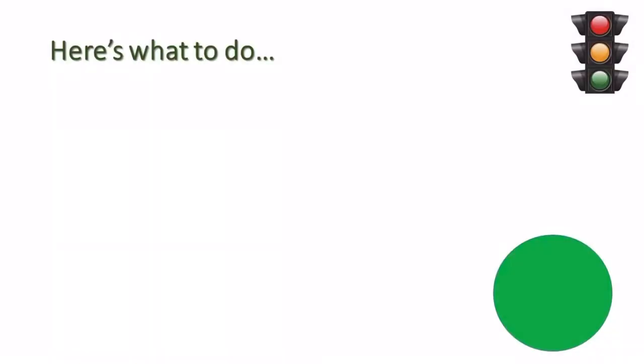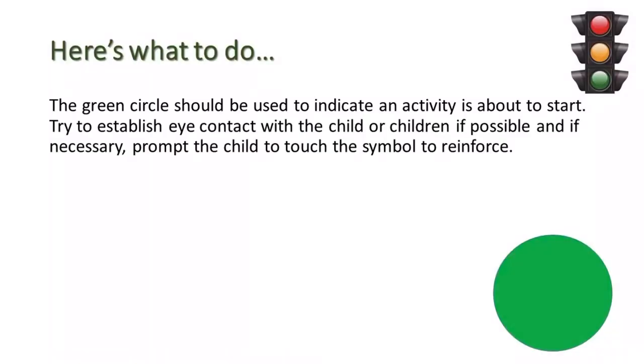Here's what to do. The green symbol should be used to indicate an activity is about to start. Try to establish eye contact with the child or children if possible and, if necessary, prompt the child to touch the symbol to reinforce the message.